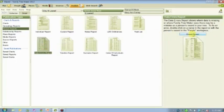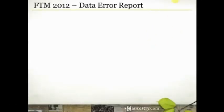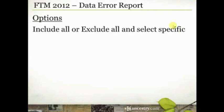I'm going to click on Create Report. It'll take a minute because it's creating based on my last settings. The first option you have when creating your report is to include all or exclude all errors, then select specific ones. All of those types of data errors we just went over — I could search for every single one across my entire database. Since my database is huge, that would take a really long time. But if your database is not that large, you could do that.